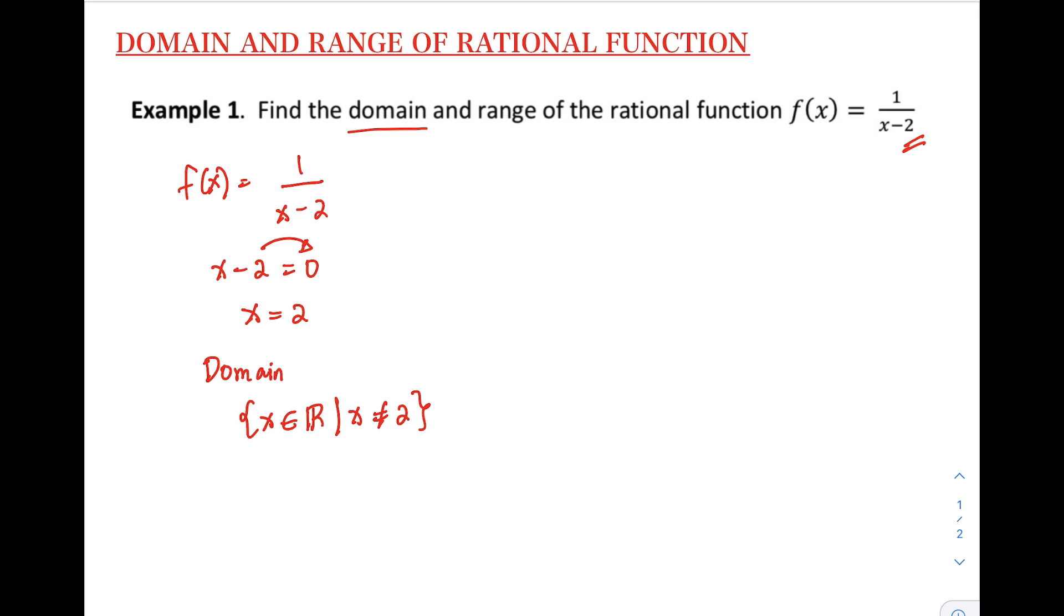So that's how simple it is. So another example, we are asked to find the domain of x plus 5 over 3x squared minus 6x. Same procedure. Equate the denominator to 0 then solve the value of x. So in this case, we solve the value of x by factoring. So factor out 3x, we have x minus 2 equals 0.